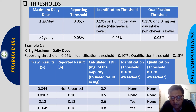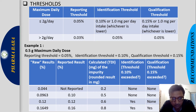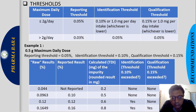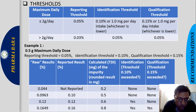For maximum daily dose ≤2 grams per day: reporting threshold 0.05%, identification threshold 0.10%, qualification threshold 0.15%. For maximum daily dose greater than 2 grams per day: reporting threshold 0.03%, identification threshold 0.05%, qualification threshold 0.05%.